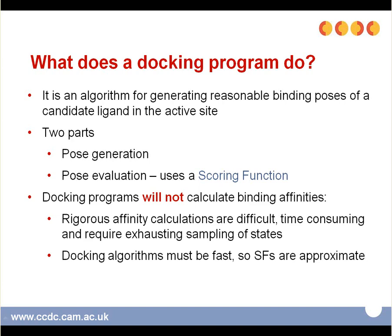A docking program is an algorithm that generates reasonable binding poses of a candidate ligand in the active site. It consists of two parts: the pose generation step and the pose evaluation step, which uses a scoring function. One of the limitations of docking programs is that they are not able to calculate binding affinities. Rigorous affinity calculations are difficult, time consuming, and require exhaustive sampling of states to treat entropy properly. Docking algorithms must be fast — they are designed to evaluate many thousands of candidate structures at any given time, and therefore scoring functions are approximative.